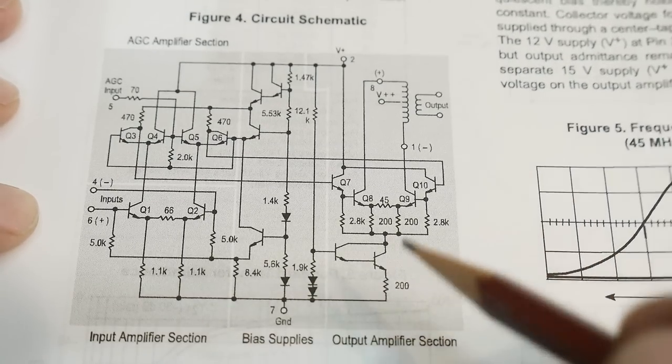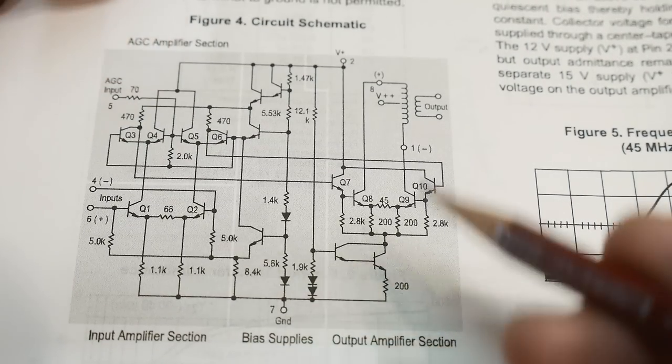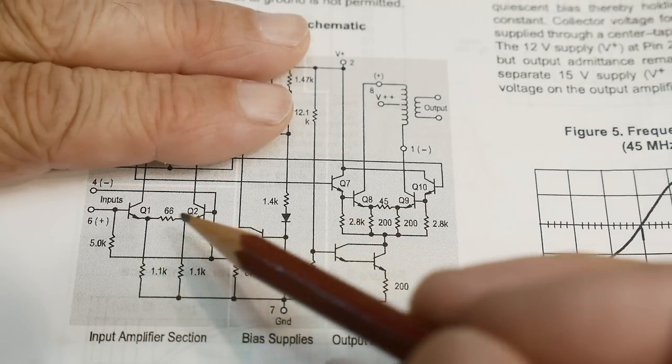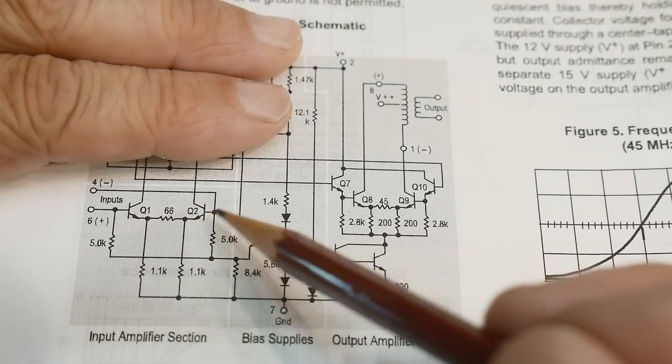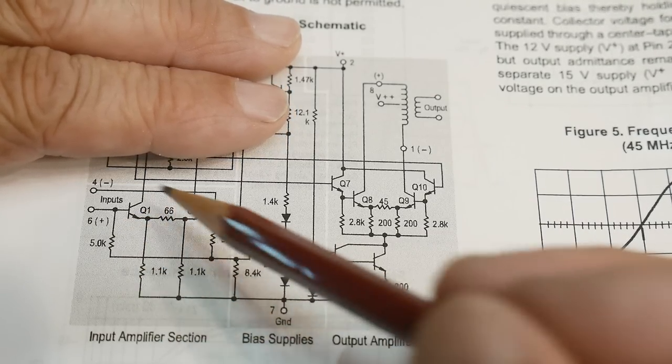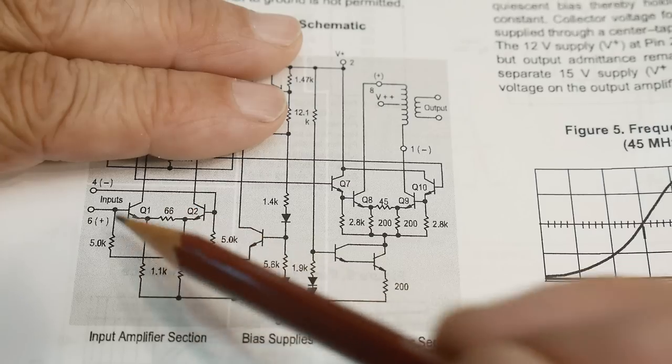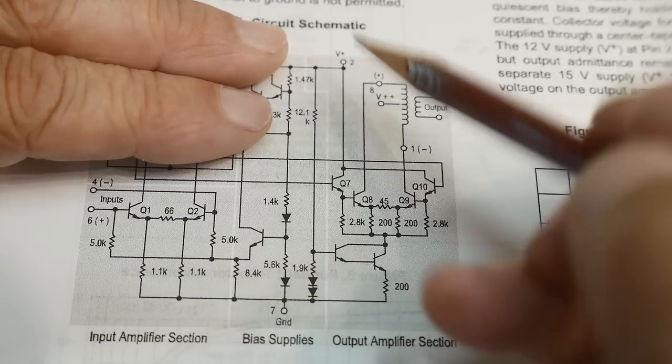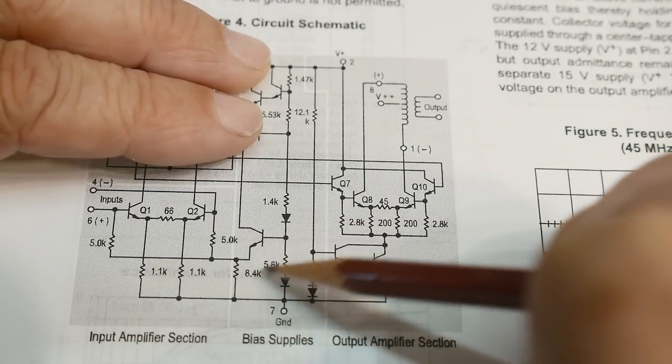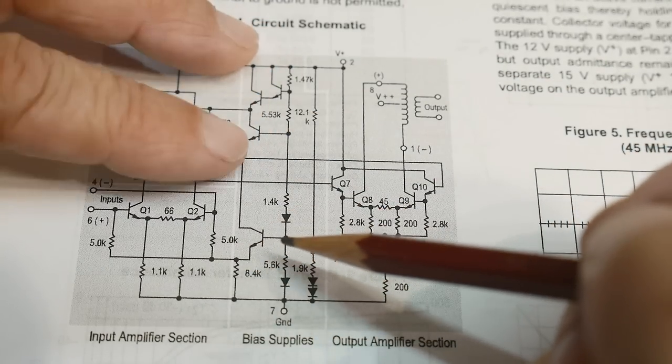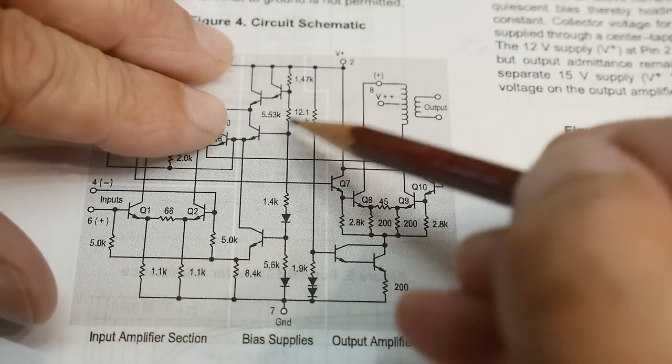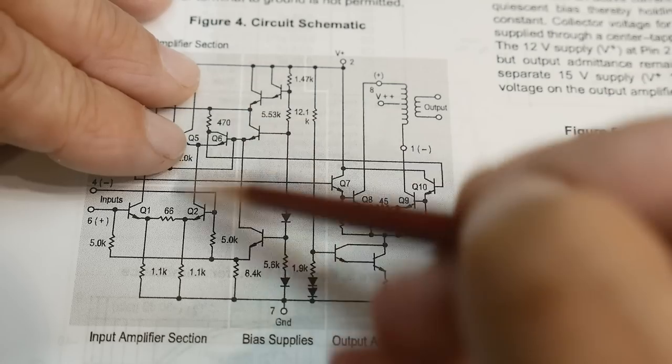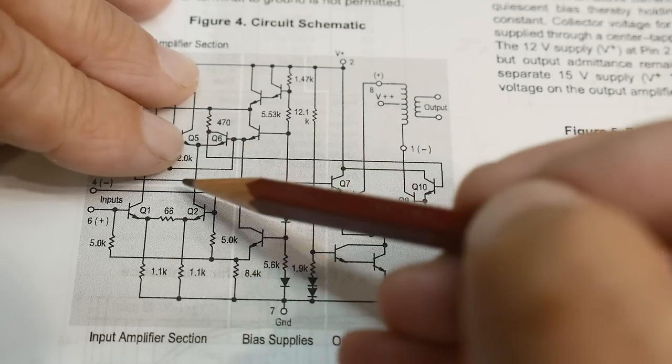So, it's going to look something kind of like an op amp. Let's ignore this for now. You can see that we have a long tail pair input. So it looks like the input of an op amp. And then we have some bias circuitry in here. This is a current source.